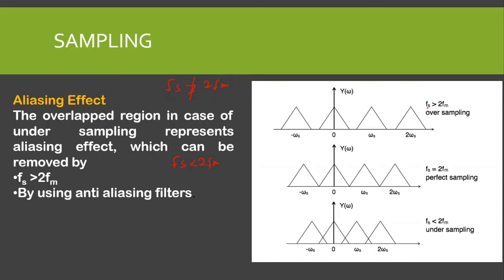When the sampling frequency is greater than 2Fm, or equal to 2Fm (ideal sampling), I can recover the signal from the sampled signal. But when the sampling frequency is less than 2Fm, we have undersampling — we haven't followed the Nyquist criteria, and because of this we have overlapping. This overlapping region in case of undersampling represents the aliasing effect. This aliasing effect can be removed in two ways: either by taking the sampling frequency greater than 2Fm to follow the Nyquist criteria, or by using anti-aliasing filters.